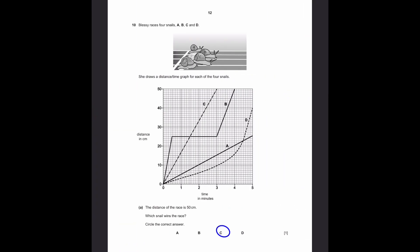Question 10. Blessie races four snails A, B, C, and D. She draws a distance time graph for each of the snails. The distance of the race is 50 centimeters. Which snail wins the race? Circle the correct answer. So, the 50 centimeters mark is over here at the top of the graph. And the time in minutes for the snail C is the shortest. Three minutes. So, that's why C is the answer.